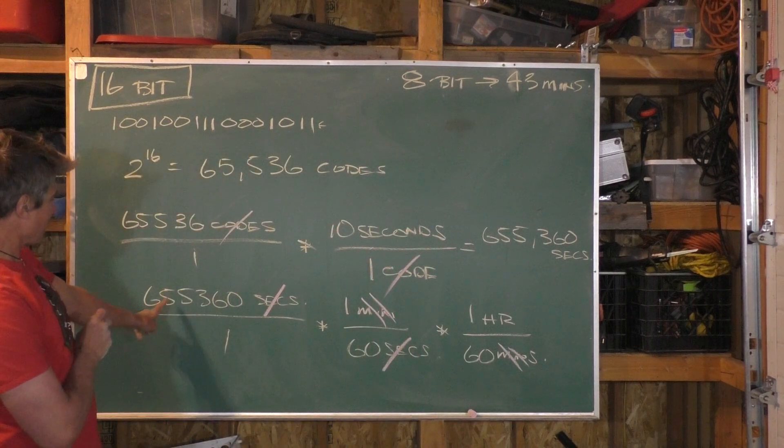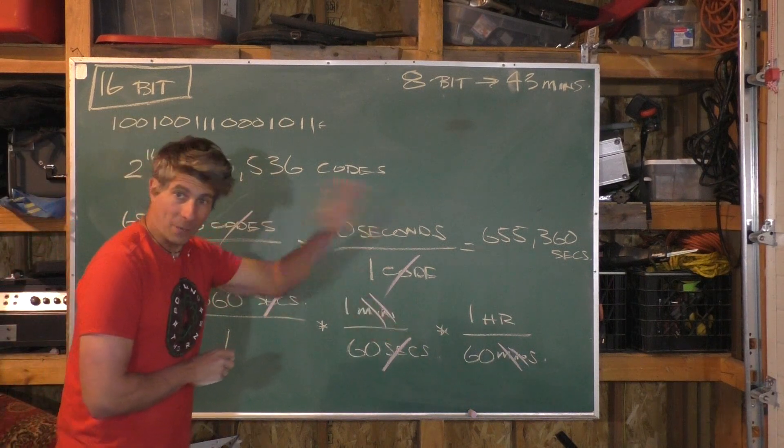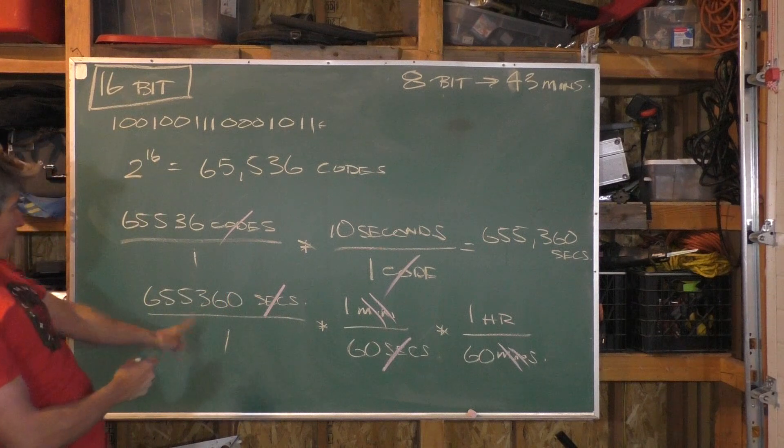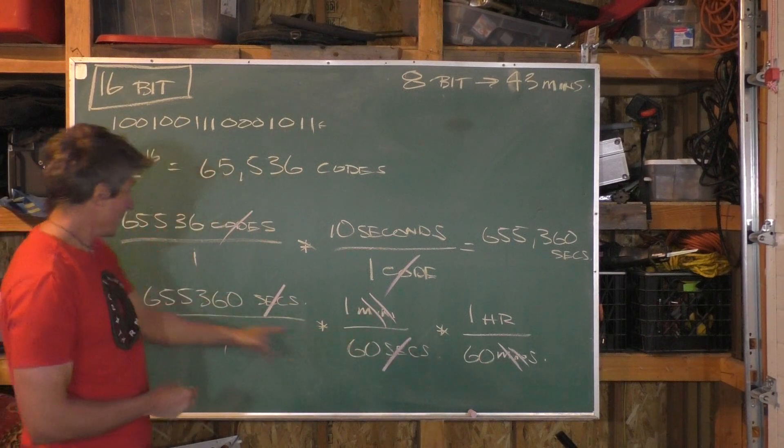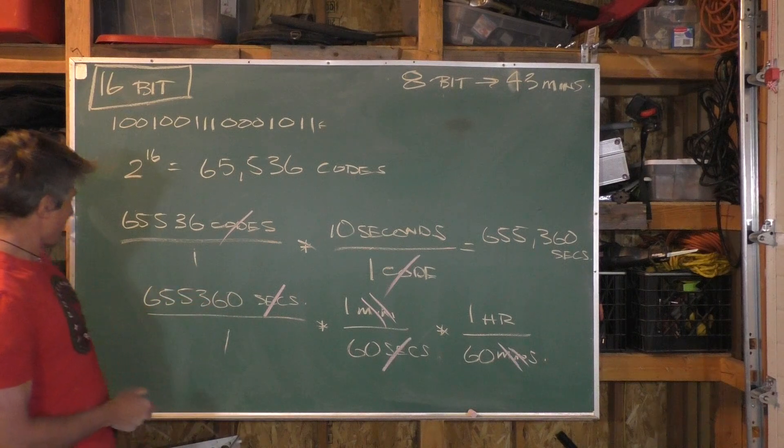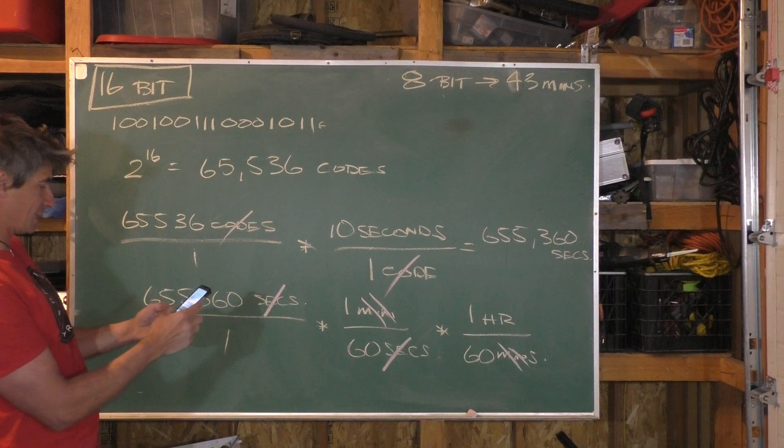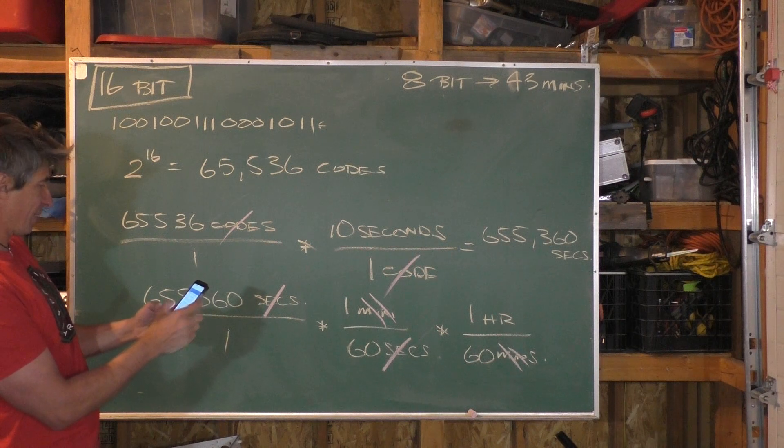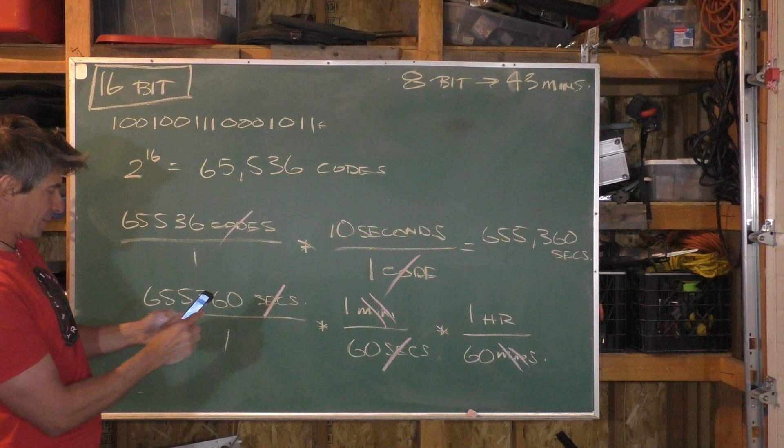So then we're going to do 655,360 times one times one on the top divided by one times 60 times 60, which is going to be 3,600. So it's going to be this number divided by 3,600, and all right, here we go.